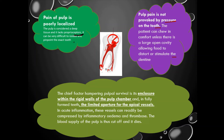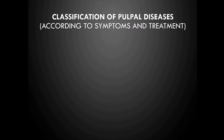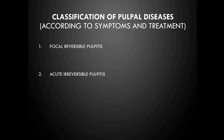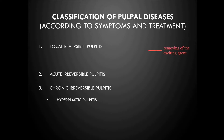Based on symptoms and treatment, pulpal diseases are classified as: focal reversible pulpitis (pulpal hyperemia), acute irreversible pulpitis, chronic irreversible pulpitis, and hyperplastic pulpitis. The treatment for focal reversible pulpitis — the only reversible form — is removing the exciting agent. For acute and chronic irreversible pulpitis, the treatment is root canal treatment.